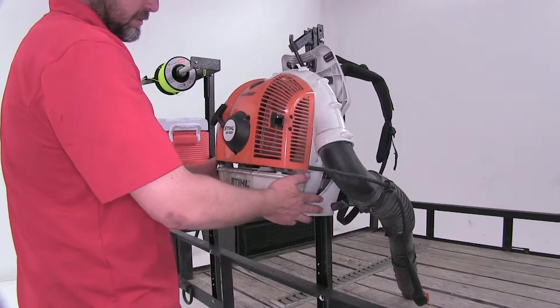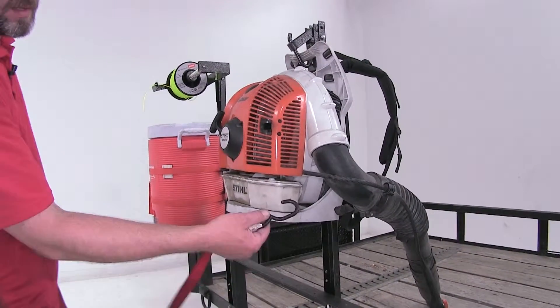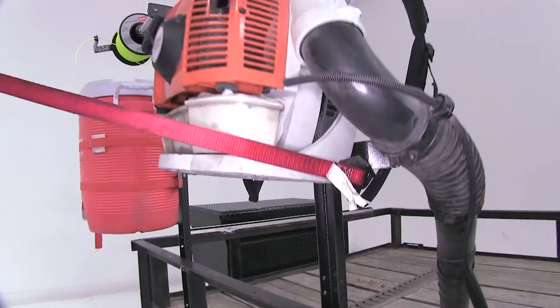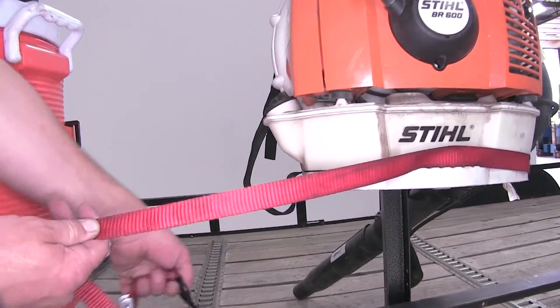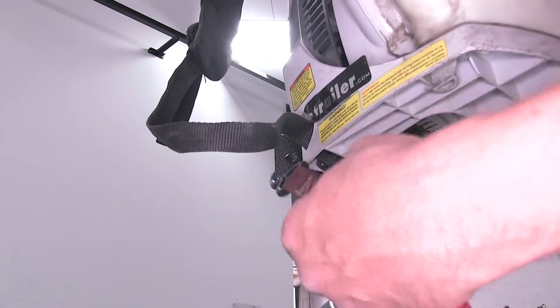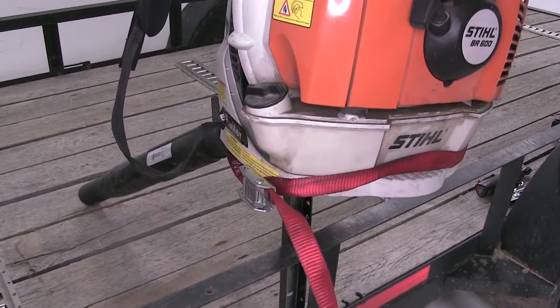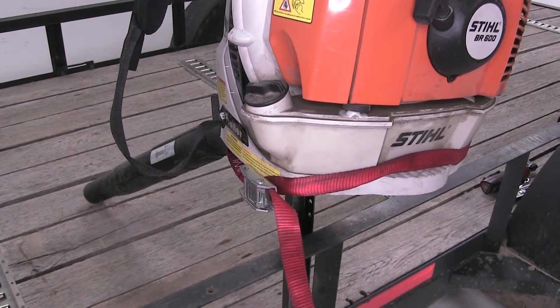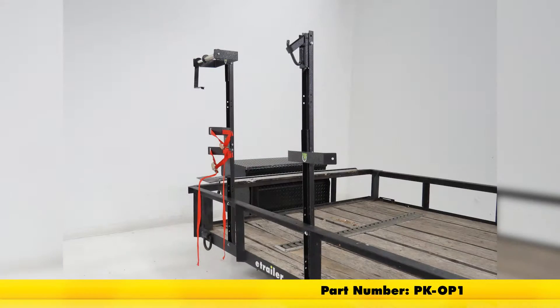Now to secure the bottom so it's not swinging while we're traveling down the road, you can use a bungee cord or we're going to use a pull strap that will simply hook into the bottom of the mount, go around the bottom of our blower, and hook in on the other side just like we did the first side. Then we can just pull it tight. There we go. Now our backpack blower is secured to the blower mounting system. And there you have it for the review and install of the Pack'Em Trailer Cargo Control Expansion Kit, part number PK-OP1.